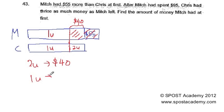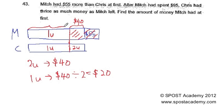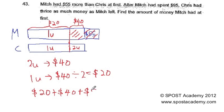Therefore 1 unit is $40 divided by 2, which gives us $20. The question is asking: find the amount of money Mitch had at first. So 1 unit is $20. To find what Mitch had at first, we simply add all together: $20 plus $40 plus $55, which gives us $115.